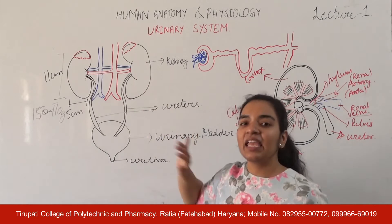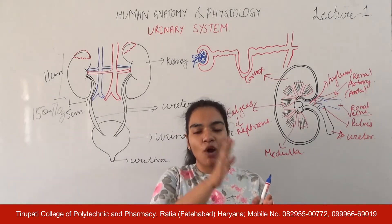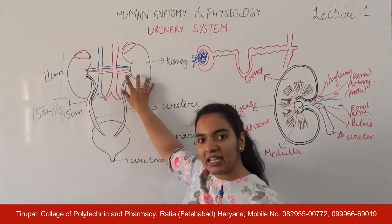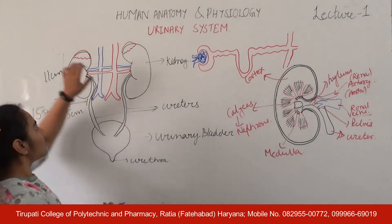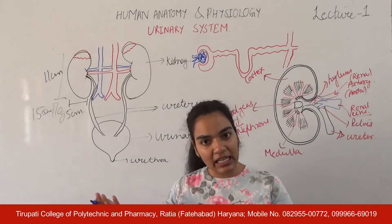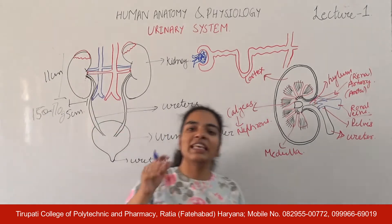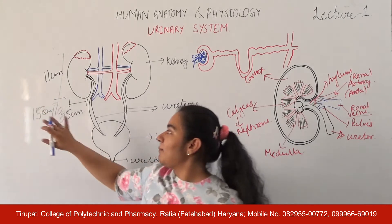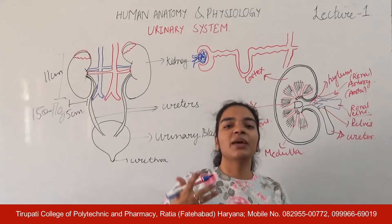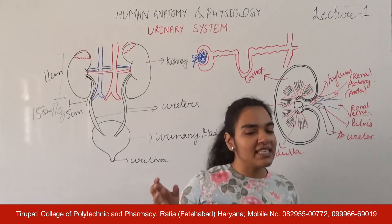These kidneys are present on the posterior portion of our body — on the back side. They are reddish-brown in colour and bean-shaped. The right kidney is comparatively smaller than the left kidney. They are generally 11 cm in length, 5 cm in width, and 2–3 cm in thickness. The kidney is a very small organ of our body, weighing about 150–170 grams.